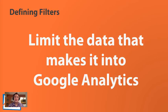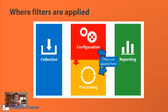The next thing I want to talk about is filters. A filter is basically just limiting the data that makes it into Google Analytics. Looking back at our slide from the first lesson, we can see there are different things happening behind the scenes when we're collecting data — the collection uses the JavaScript tracking code, configuration is done in the administrator portion of Google Analytics, then the data is processed and goes into the reports.